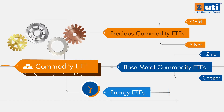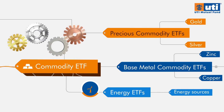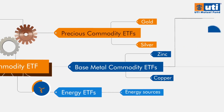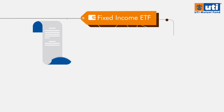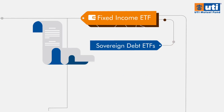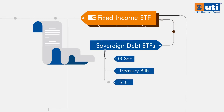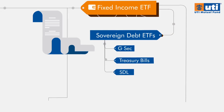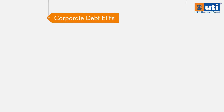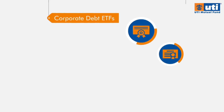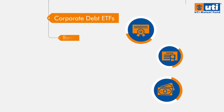Energy ETFs are ETFs based on energy sources. Fixed Income ETFs include Sovereign Debt ETFs — ETFs based on an index with underlying sovereign securities like GSEC, Treasury Bills, and SDL. Corporate Debt ETFs are ETFs based on an index with underlying securities like Bonds, Debentures, NCDs, etc.